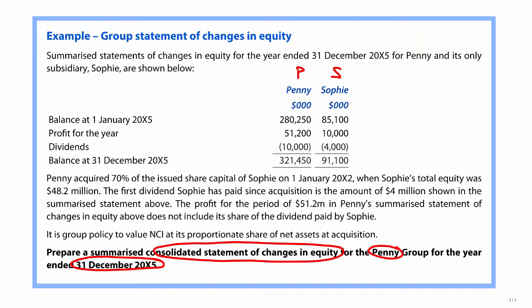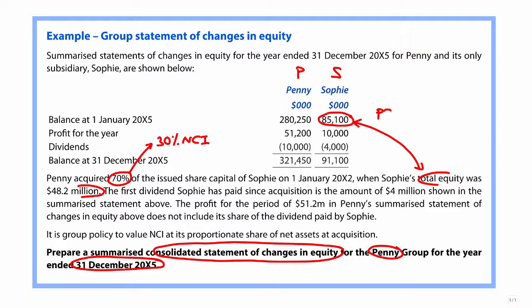We own 70% of the subsidiary, so we have a 30% non-controlling interest. We're told that the acquisition took place on the 1st of January X2 — several years ago — and that the total equity at that point was 48.2 million. This is important because we can look at Sophie's equity at the start of the 20X5 year and compare it to the equity when the subsidiary was acquired, giving us the post-acquisition movement in equity. That movement will then be allocated to the NCI and partly to the parent.